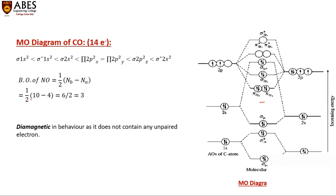Calculating the bond order for CO: electrons in bonding orbitals = 10, electrons in antibonding orbitals = 4, so bond order = (10 − 4) / 2 = 3. Since all electrons are paired, CO exists in a diamagnetic state.